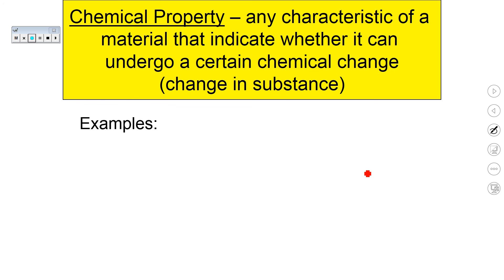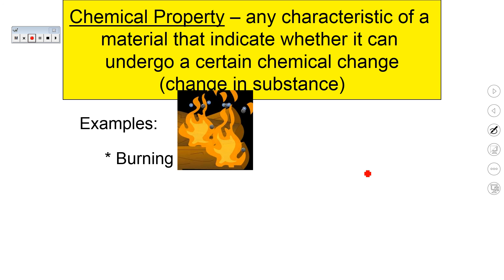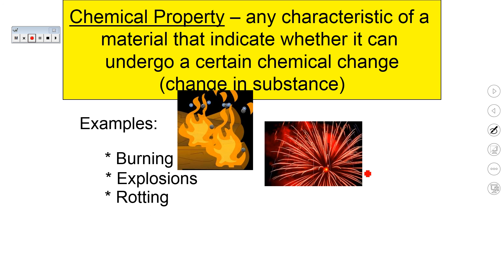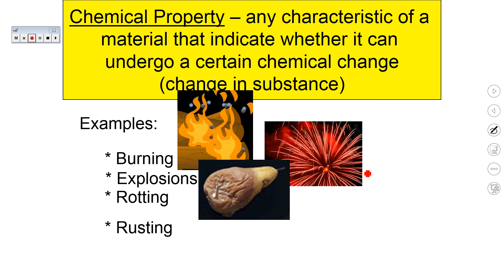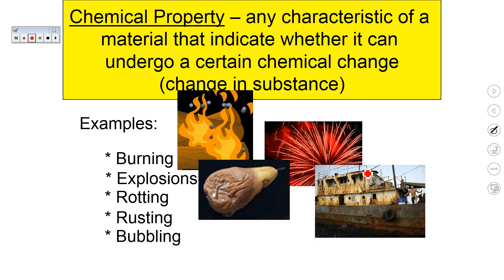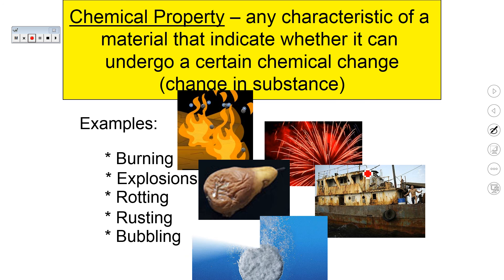A chemical property is any characteristic of a material that indicates whether it can undergo a certain chemical change — it changes the substance. Burning is an example of a chemical property, explosions are examples of chemical properties, rotting, rusting, and bubbling are all properties that indicate a chemical change has occurred. You are creating a new substance when all of those things have happened.